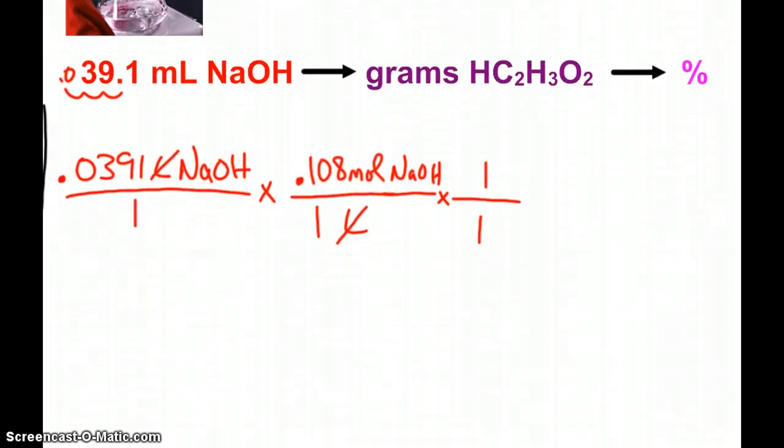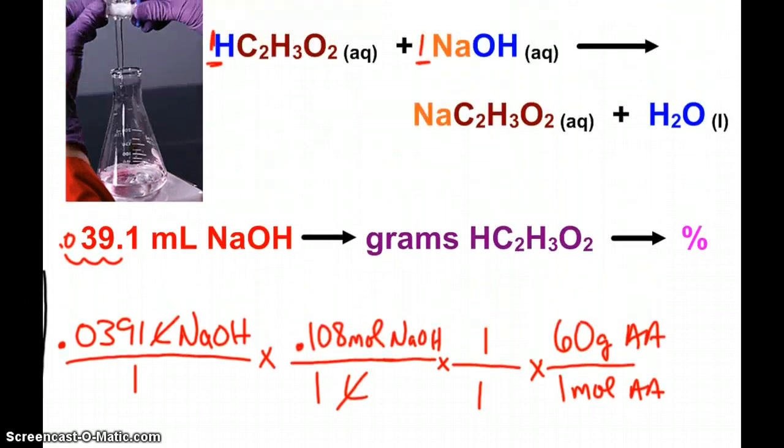And now I can change from moles of acetic acid to grams of acetic acid because the molar mass is 60. I've got one hydrogen, two carbons, three more hydrogens, and two oxygens, which will add up to 60.